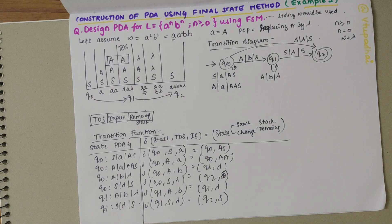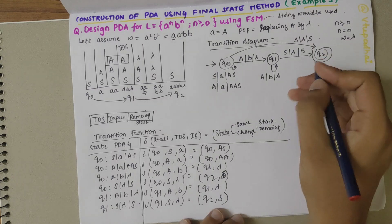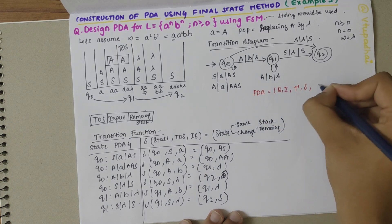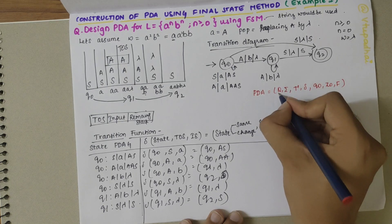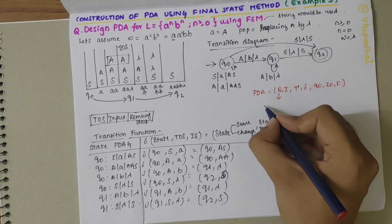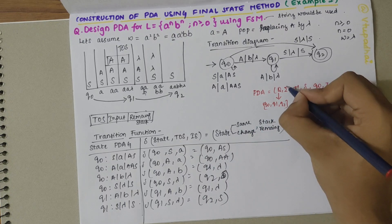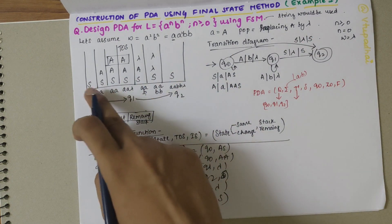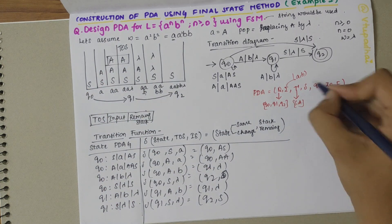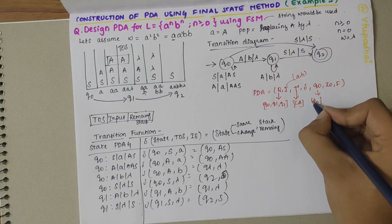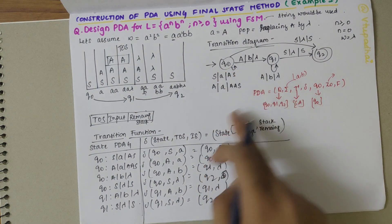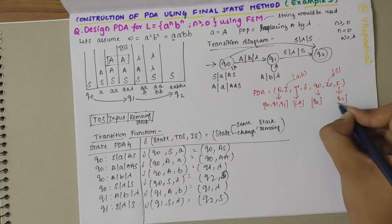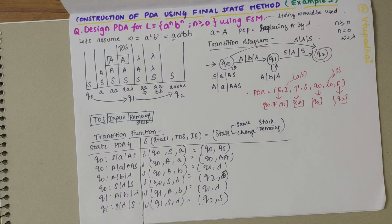To formally define the PDA: PDA = (Q, Σ, Γ, δ, q0, Z0, F), where Q is all states — {q0, q1, q2}; Σ is the input alphabet — {a, b}; Γ is the stack alphabet — {S, a}; δ is the transition function defined above; q0 is the start state; Z0 is S, the initial stack symbol; and F = {q2} is the set of final states.